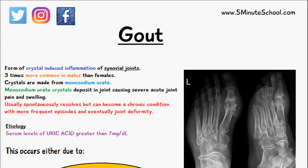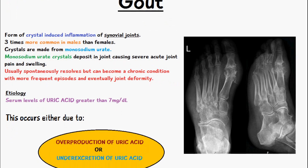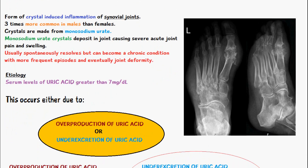In today's video we're going to be talking about gout. Gout is a crystal-induced inflammation of the synovial joints. It's three times more common in males than females, and the crystals are made from monosodium urate. Monosodium urate crystals are what causes gout, and they deposit in the joint causing severe acute joint pain and swelling.